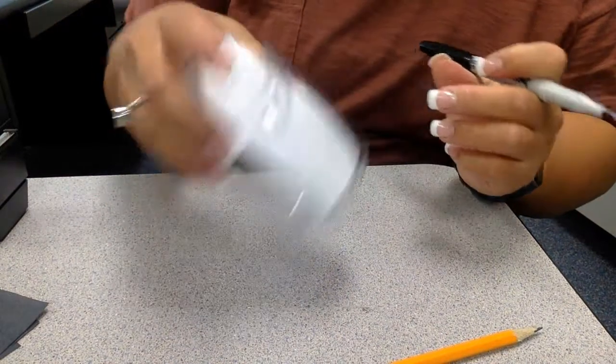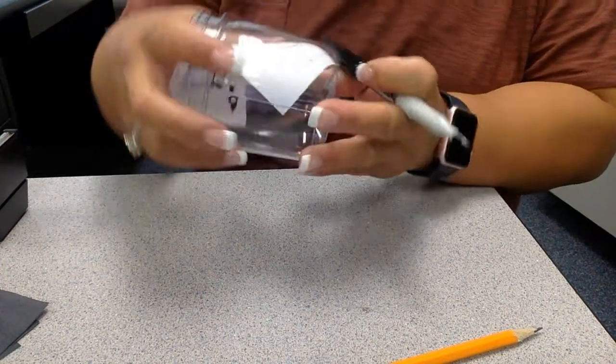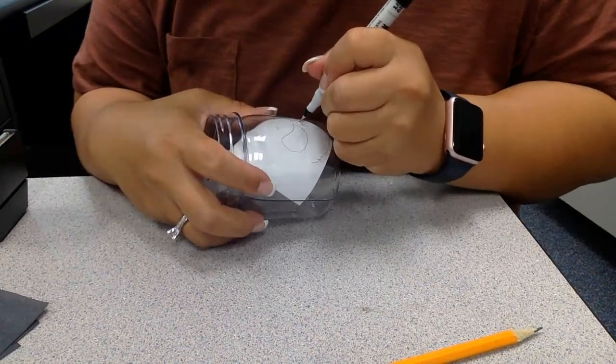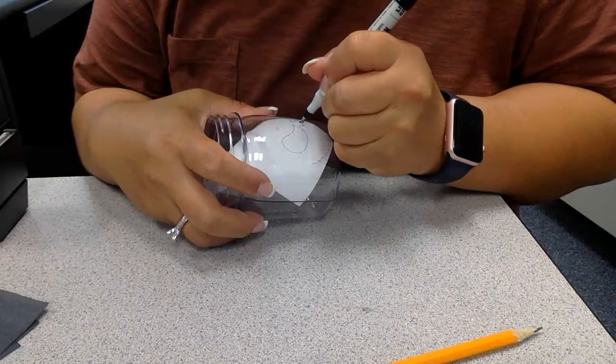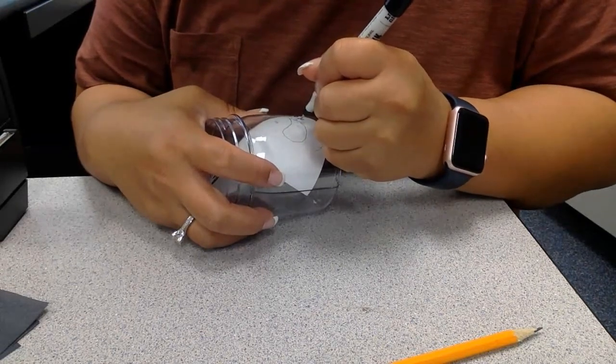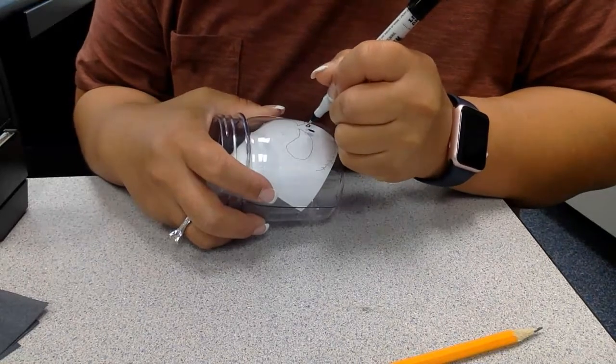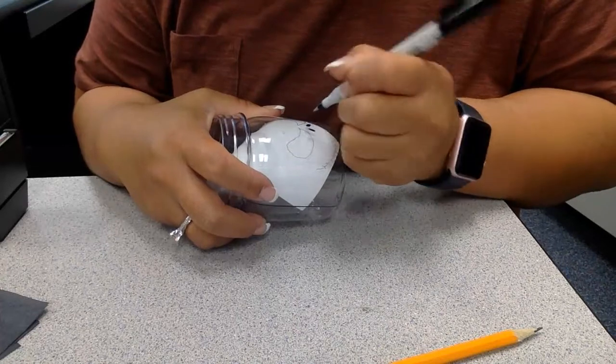As you can see, I put a white piece of paper on the back just so that I can see it a little better. And you can color it in using the permanent marker or using the paint, either one.